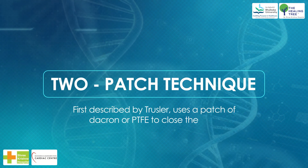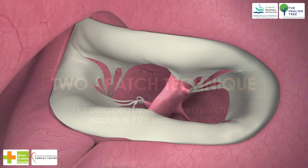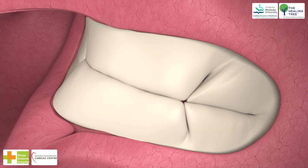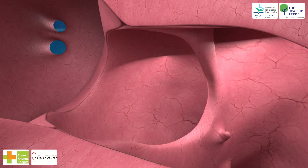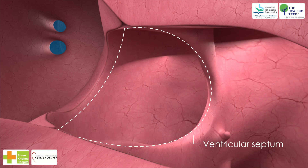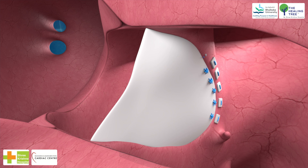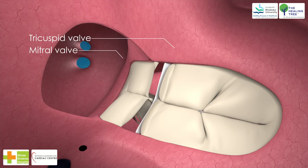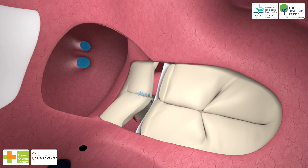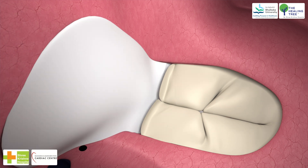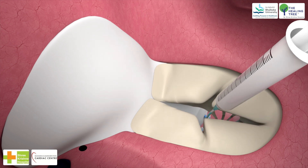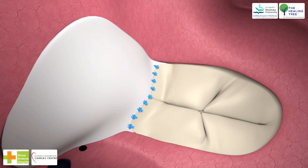The two-patch technique, first described by Trussler, uses a patch of Dacron or PTFE to close the VSD. The distance between the superior aspect of what will become the mitral valve and the crest of the ventricular septum is assessed to accurately fashion a PTFE patch for the VSD component. The cleft in the mitral valve, created between the left superior and left inferior leaflets, is closed with simple interrupted polypropylene sutures, carried to the insertion site of the first-order chordae tendineae at the edge of the mitral valve leaflet. A small residual jet can often be eliminated by further closing the cleft or placing plication sutures at the commissure.